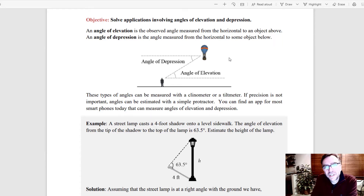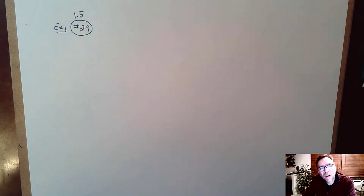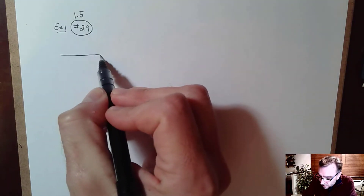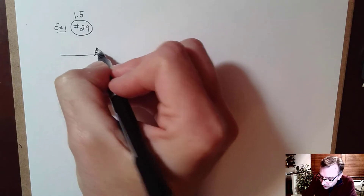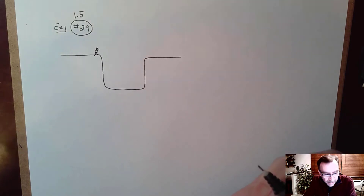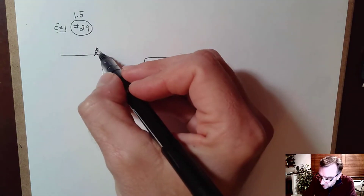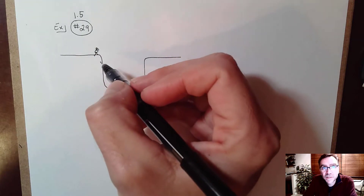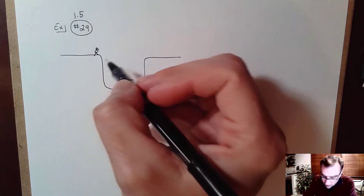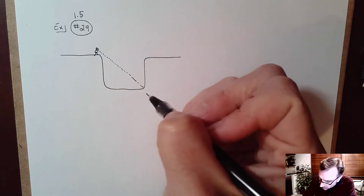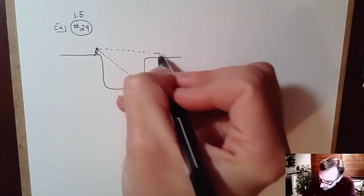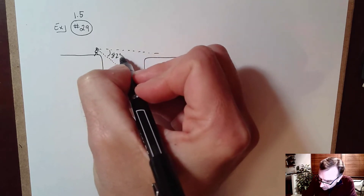If you're up at the balloon and looking out at the horizontal, the angle looking down from the horizontal is the angle of depression. Let's draw a picture and figure out the height of the sinkhole. We have a sinkhole, and there's an observer up here looking down. The line of sight to the bottom has an angle of depression of 82 degrees — that's the angle with the horizontal.